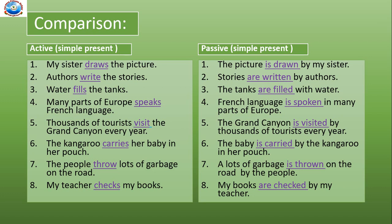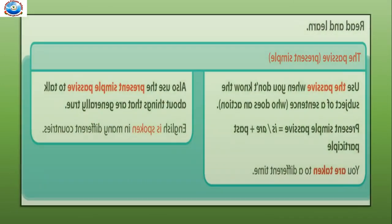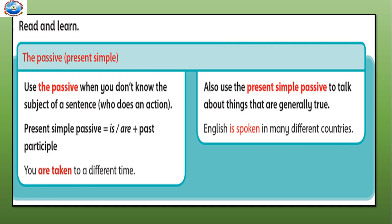Now let's read what is given in the class book. Read and learn the passive present simple. Use the passive when you don't know the subject of a sentence — who does an action? Present simple passive is written with is or are plus past participle. For example, you are taken to a different time. Also use the present simple passive to talk about things that are generally true — English is spoken in many different countries.